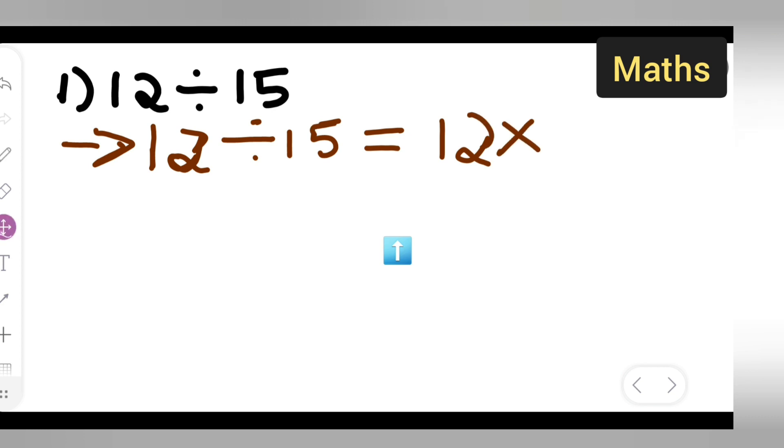Then multiply this with the reciprocal of 15. So that is 1 upon 15, right? Now this equals 12 upon 15.